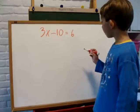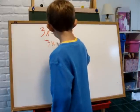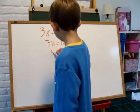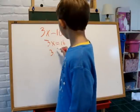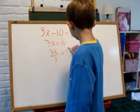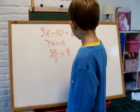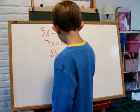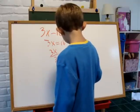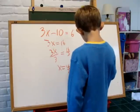First, we add 10 to both sides to isolate the variable. 3x equals 16. Then we divide both sides by 3, and get x equals 16 thirds, which also equals 5 and a third.